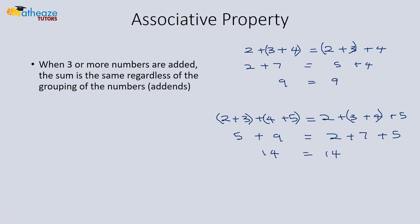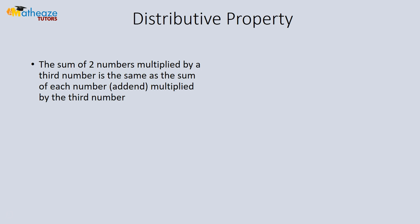The distributive property states that the sum of two numbers multiplied by a third number is the same as the sum of each of the numbers multiplied by the third number. For example, 2 times (3+4) equals (2×3) plus (2×4). So 2 times 7 is 14, and 6 plus 8 is also 14 — the rule holds true.